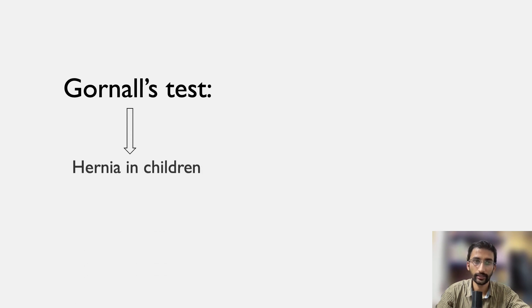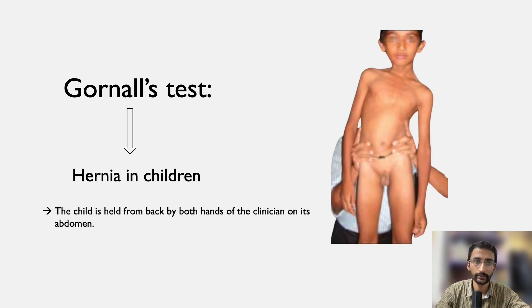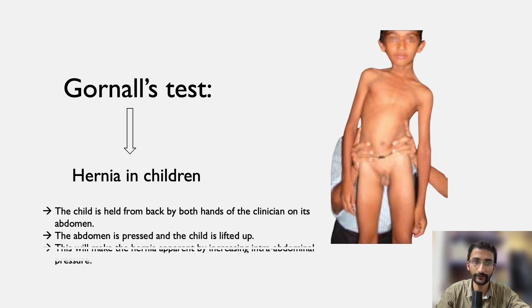Garnal's test is done in case of hernia in children. The child is held from behind by both hands of the clinician on its abdomen. The abdomen is pressed and the child is lifted up, which will make the hernia apparent by increasing intra-abdominal pressure.